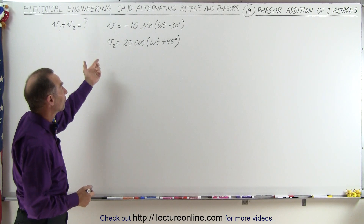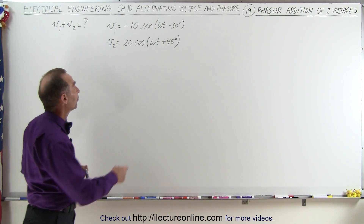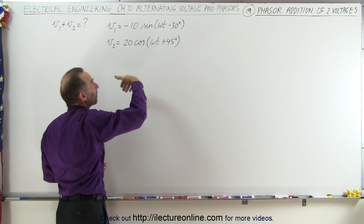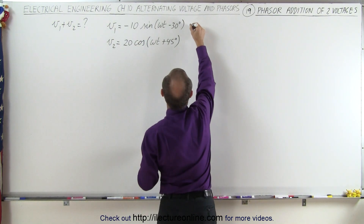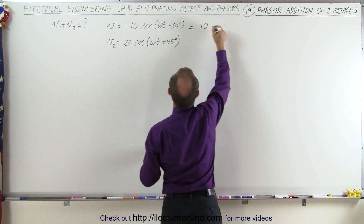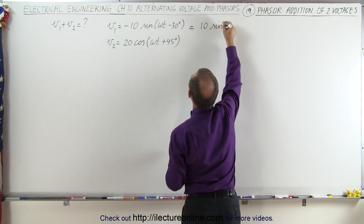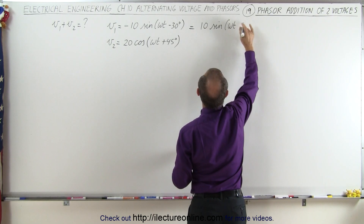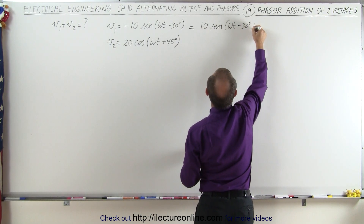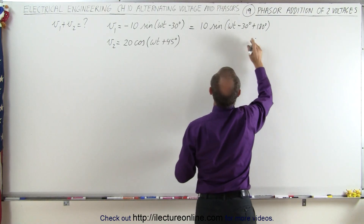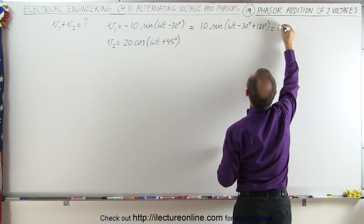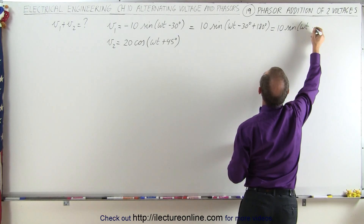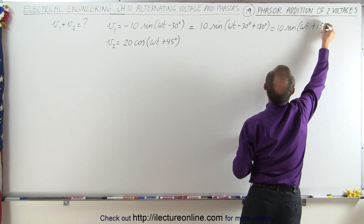On the first voltage, we need to convert it to cosine form. The first thing we want to do is change the minus sign to a positive sign by adding 180 degrees. So this can now be written as positive 10 times the sine of omega t minus 30 degrees plus 180 degrees. When we combine that, this is equal to 10 times the sine of omega t plus 150 degrees.